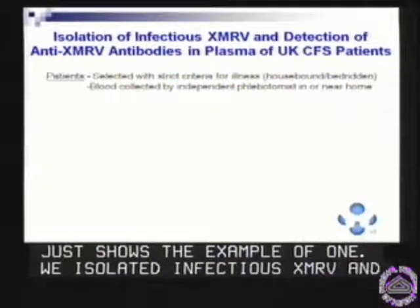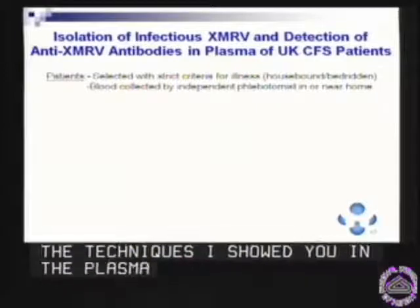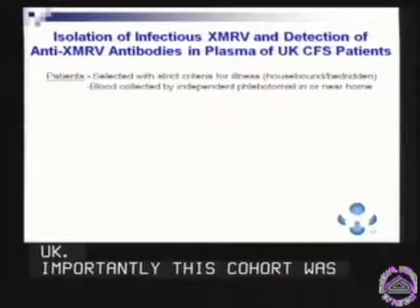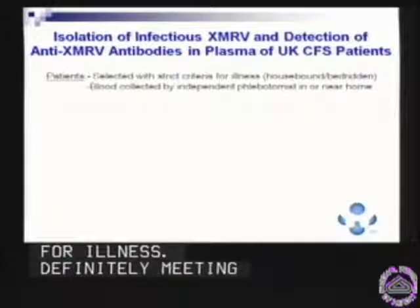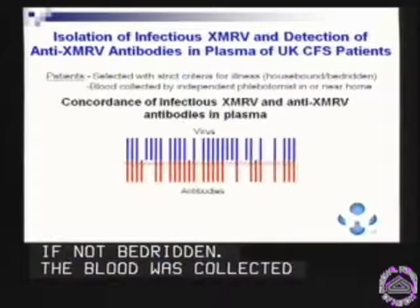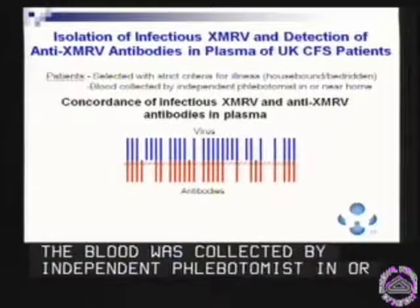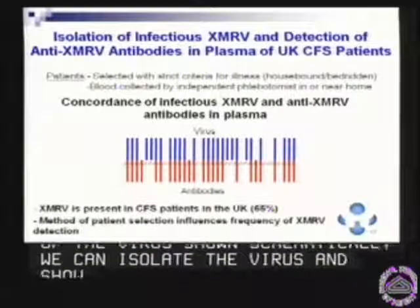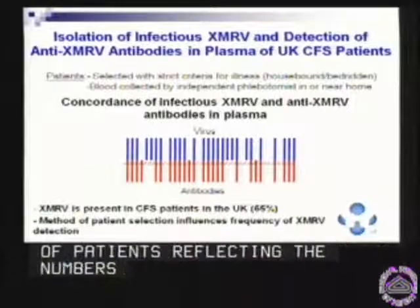We used all of these techniques to look at various cohorts — more than seven cohorts around the world — and I show one example. We isolated infectious XMRV and detected antibodies to XMRV by the techniques described, in the plasma of a UK cohort. Importantly, this cohort was selected with strict criteria, definitely meeting the Canadian consensus criteria, and these patients were largely home-bound if not bed-ridden. Blood was collected by an independent phlebotomist near their home. We could isolate the virus and show antibodies in more than 65% of these patients, reflecting the numbers seen in our study and the Lo-Alter study.